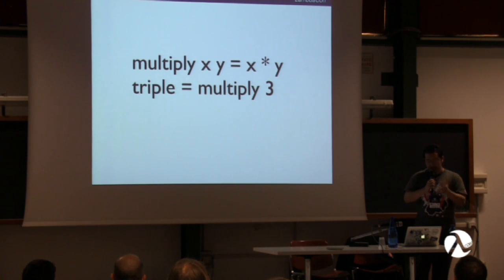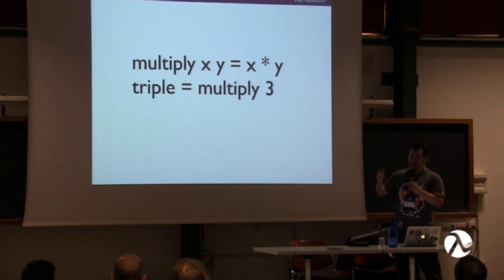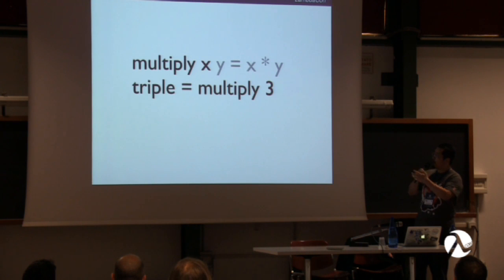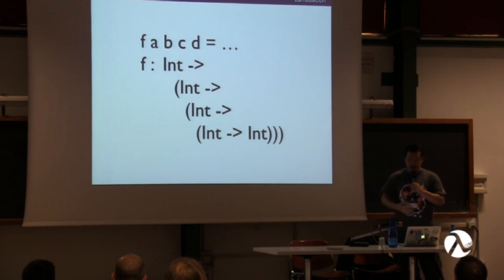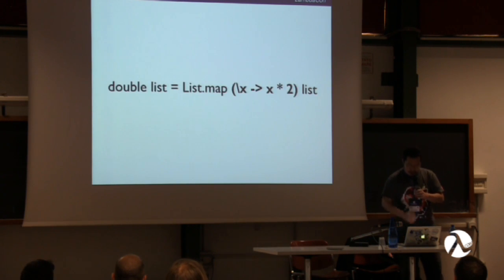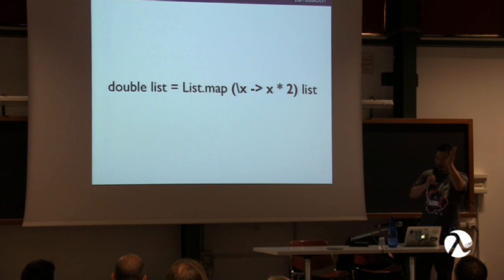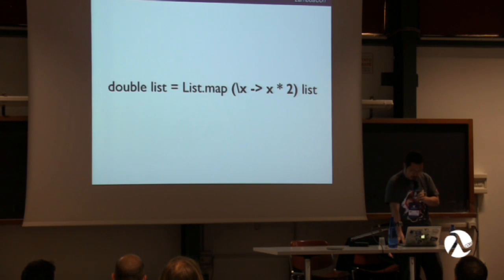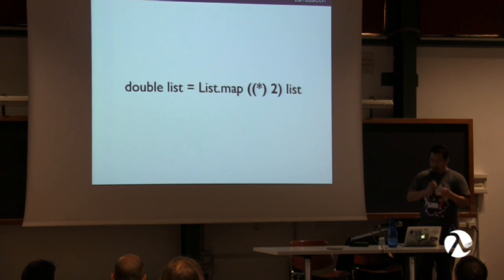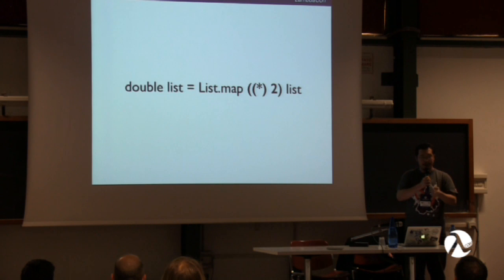In Elm and Haskell, functions are curried by default. This means that when you have a function that takes multiple arguments, you can partially apply it with one argument and get back another function which takes one fewer argument. This can be applied to functions with any number of arguments. A lambda starts with a backslash followed by the arguments separated by spaces. You can also rewrite a lambda by using an operator as a function and partially applying it — for example, using the multiply operator with the first argument of two.